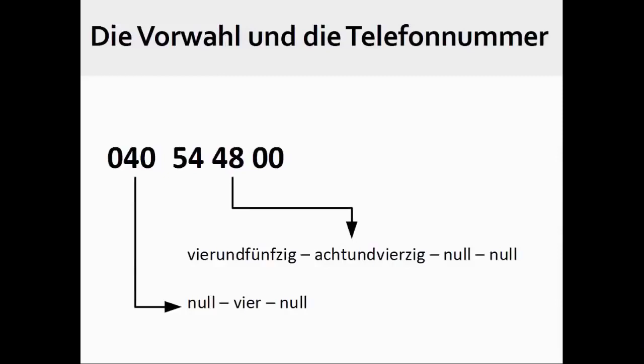With German telephone numbers, however, one usually expresses the dialing prefix or area code as individual numbers: null, vier, null. The actual telephone number is generally divided into a group of numbers that one speaks in the manner taught earlier in this presentation: vierundfünfzig, achtundvierzig, null, null.